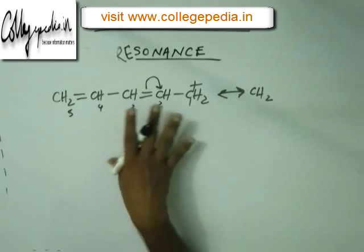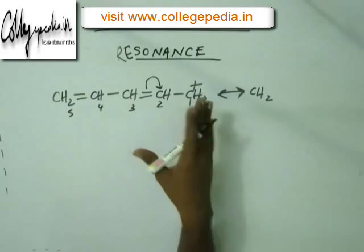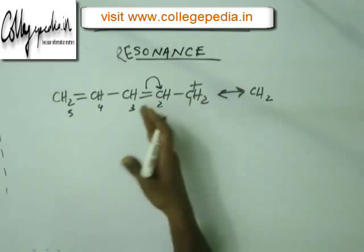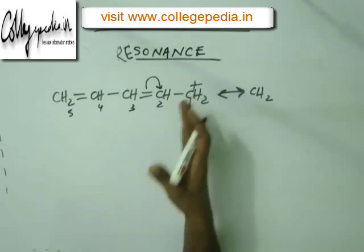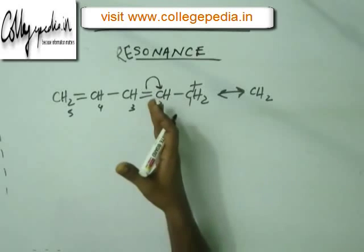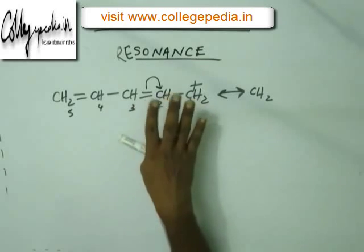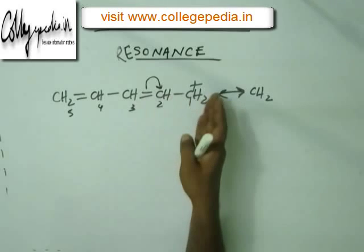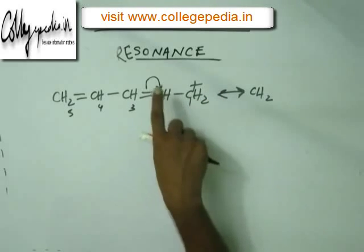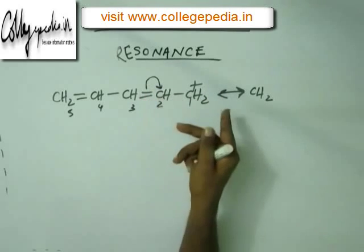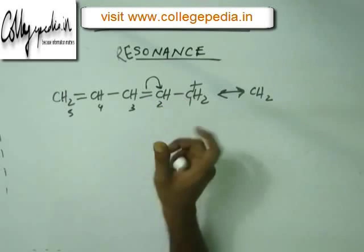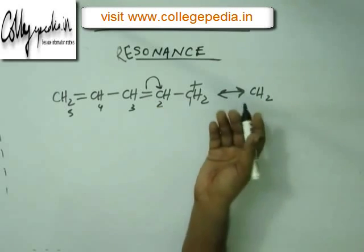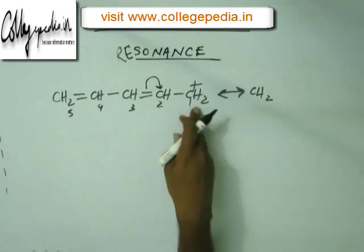In order to draw a resonating structure, we bring negative charge adjacent to positive charge. Positive charge means empty orbital; negative charge means completely filled orbital. When a completely filled orbital becomes adjacent to a completely empty orbital, we transfer one electron from the filled to the empty, so both have one electron, resulting in overlap and formation of a new bond.